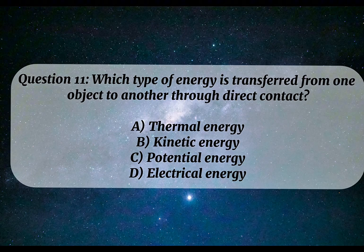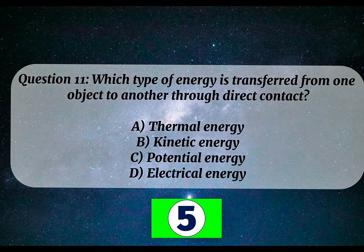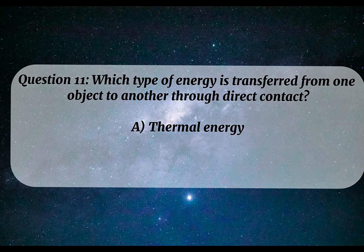Question 11. Which type of energy is transferred from one object to another through direct contact? A. Thermal energy. B. Kinetic energy. C. Potential energy. D. Electrical energy. Correct answer: A. Thermal energy.